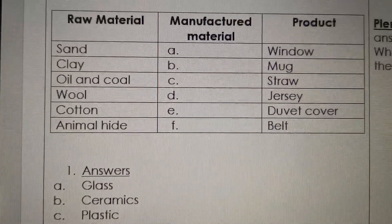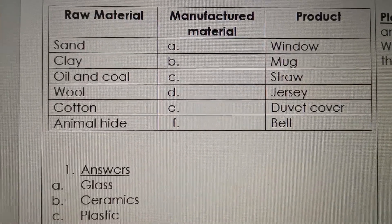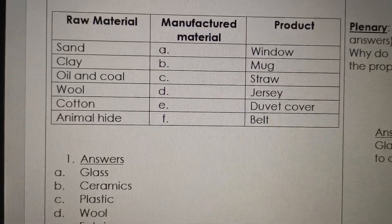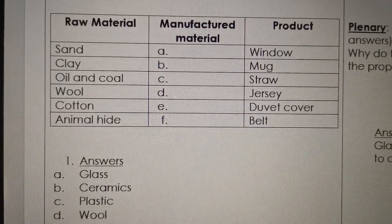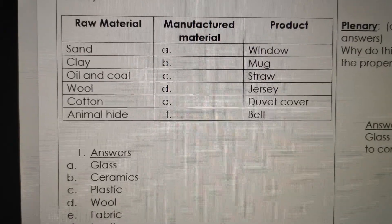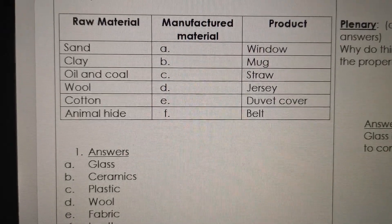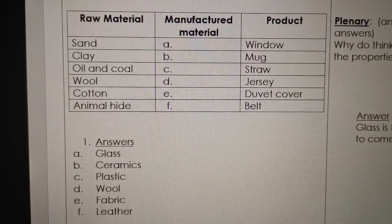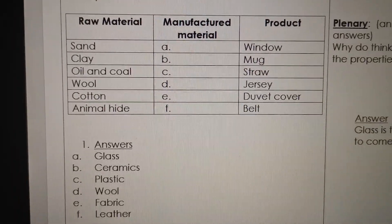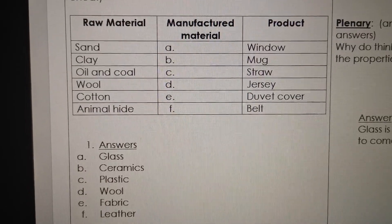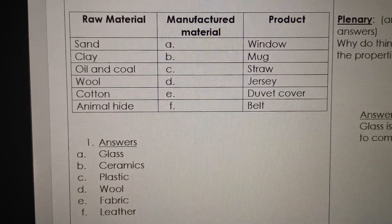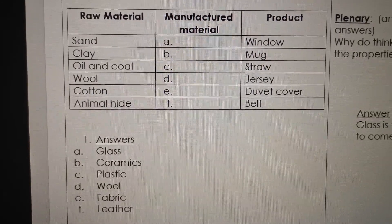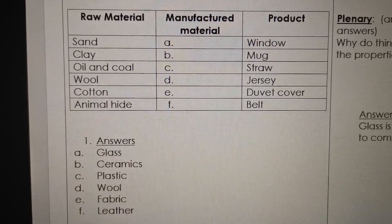Wool and a jersey — so knitting wool, they're making knitting wool. Cotton, duvet cover — the manufactured material is fabric. And animal hide, and your belt is made out of leather. If it was easy, you know your work. But if you struggled, you have to do a little bit of revision and go through your summaries and activities of the last two weeks to be able to do your topic revision.